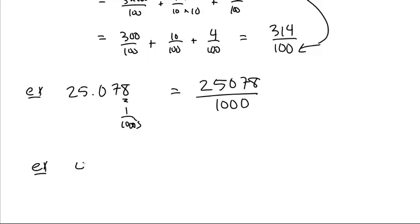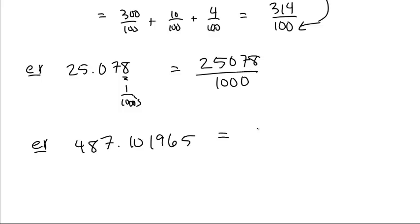Let's say you have 487.101965. Well, you want to write this as a fraction. That's easy. 487.101965. We want to move the decimal place six places, so you divide by one million. And that will totally do it.